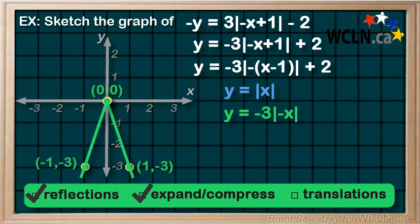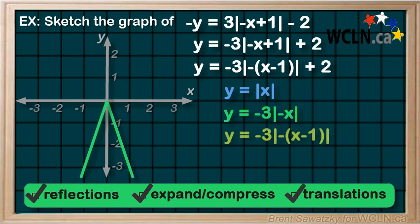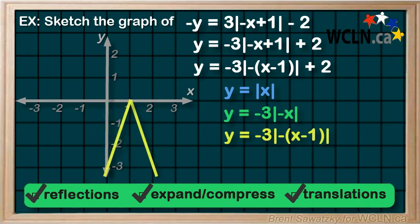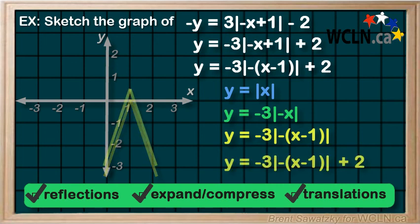Next in our order of transformations we go to our translations. The horizontal translation has us moving 1 to the right. And then our vertical translation involves shifting everything up by 2. And we're done.